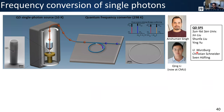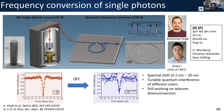Former postdoc Anshuman Singh did quantum frequency conversion experiments together with Cheng, in collaboration with Jin Liu from Sun Yat-sen University and Christian Schneider and Sven Hufling from the University of Würzburg. We worked with true single-photon sources as input — a quantum dot in a micro-pillar cavity, stuck in a cryostat, cooled down, with single photons extracted and then frequency shifted with our silicon nitride nonlinear optics. We showed things like the preservation of anti-bunched photon statistics, the preservation of coherence time, and Hong-Ou-Mandel interference — taking photons initially at different wavelengths, spectrally shifting one to match the wavelength of the other, interfering them on a beam splitter, and observing HOM interference.